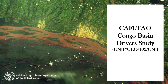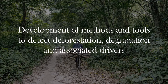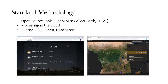Hi, my name is Aurelie Shapiro from the Food and Agriculture Organization of the United Nations. I'll be discussing our Congo Basin Driver Study on behalf of myself and Remy D'Annunzio. The goal of the project is to develop automated, reproducible, and scalable tools to detect deforestation, degradation, and associated drivers, supporting land use planning and sustainable use of forests. We are developing a global methodology using open source tools from Open Forests, including CollectEarth and CPAL, to process massive amounts of satellite imagery in the cloud — fully reproducible, open, transparent, and scalable.